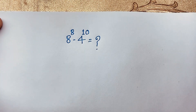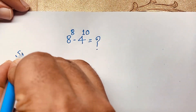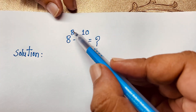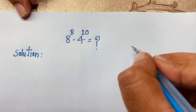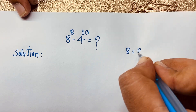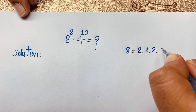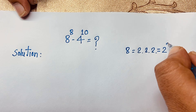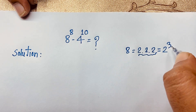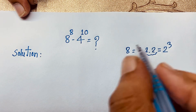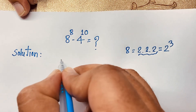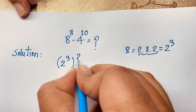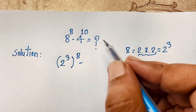Let's start the solution. First of all, I can see that here is 8 to the power 8. This 8 can be written as 2 times 2 times 2, which is 2 to the power 3. So 8 equals 2 to the power 3, and therefore 8 to the power 8 equals (2 to the power 3) to the power 8.